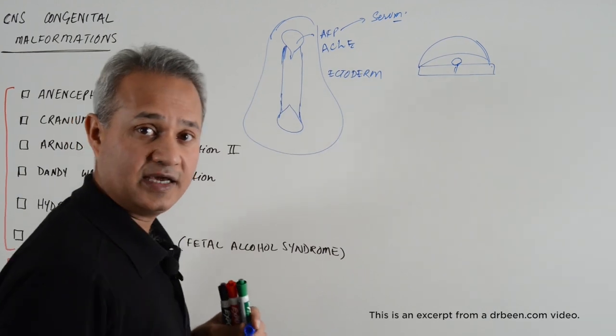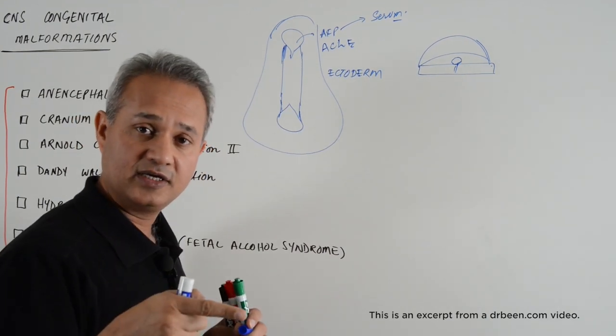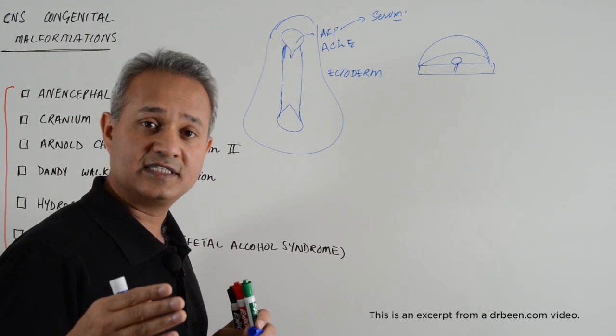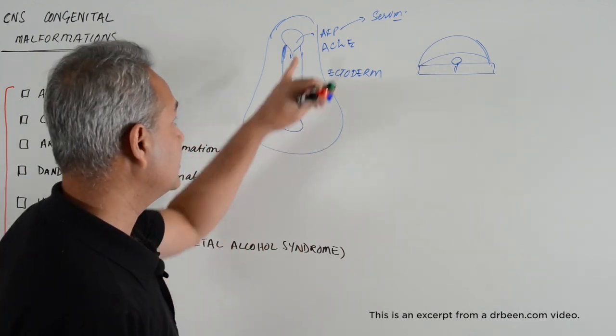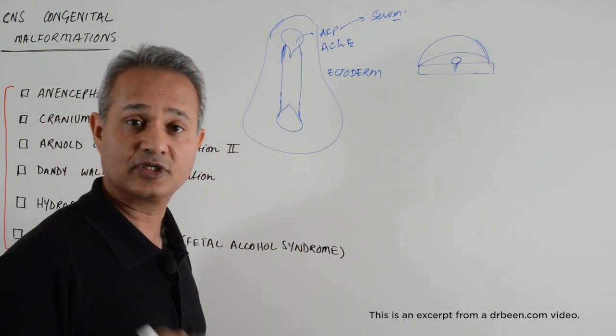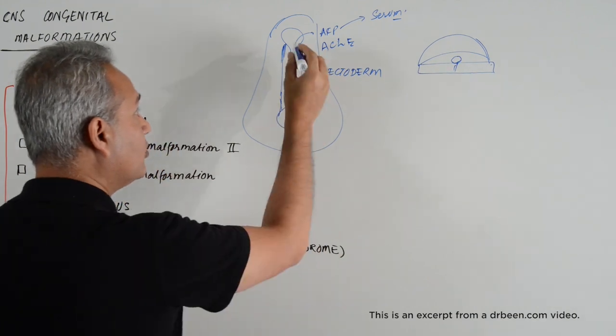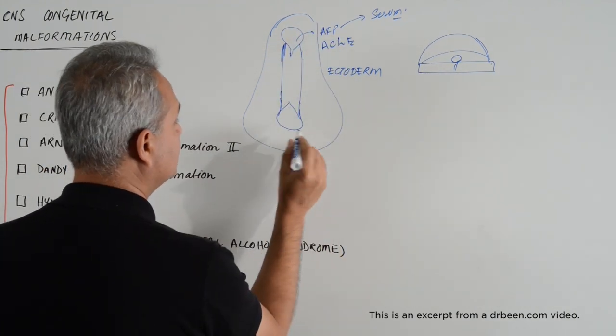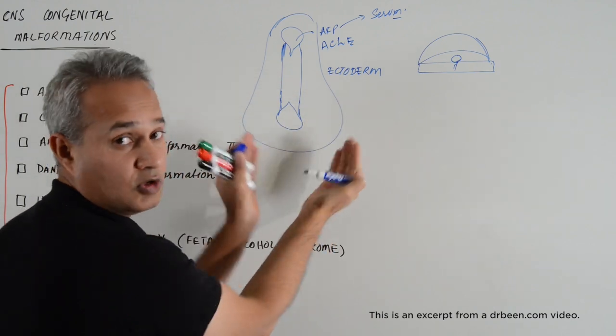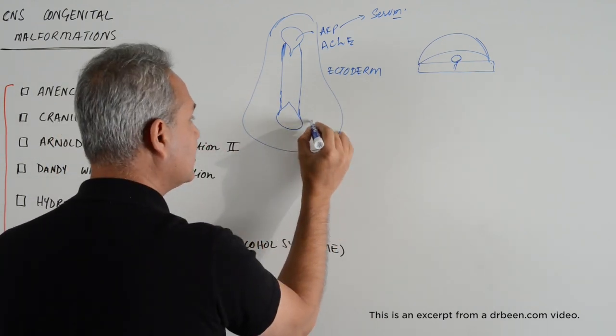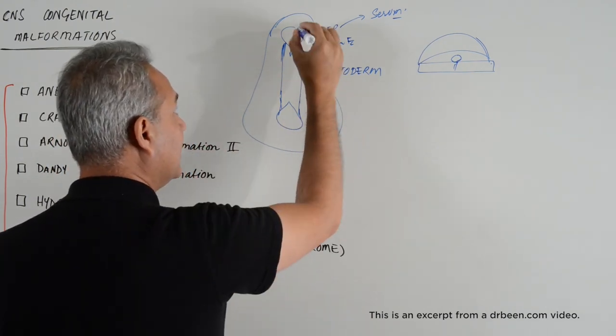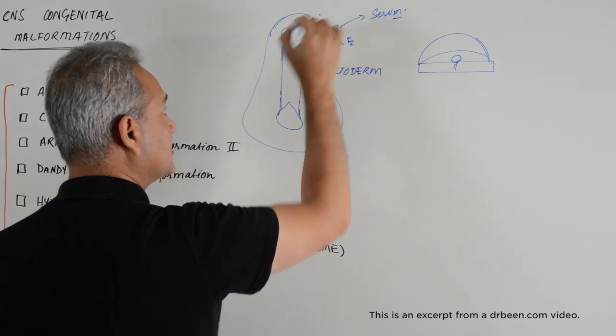Increased AFP and acetylcholinesterase in the amniotic cavity or increased AFP in the mother is actually an indication that there is some problem with the neuropores. When do the neuropores close? We know that the cranial neuropore, this is the cranial, the more swollen side is a cranial side. Cranial closes at 25th day and caudal closes at 27th day.